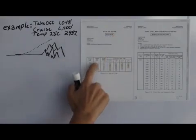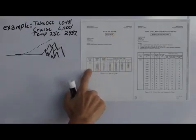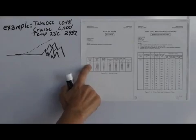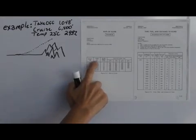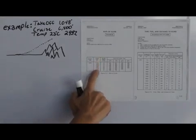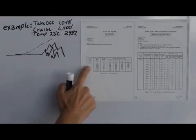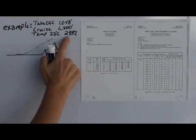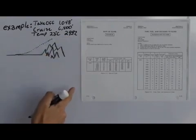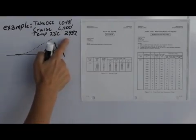On the rate of climb chart, they only give us one weight choice, which is maximum gross weight, 2300 pounds. And the pressure altitude column, you would have to calculate your pressure altitude. In my given example, we just have standard pressure, 29.92, so the altitude we choose would also be the same as our pressure altitude.